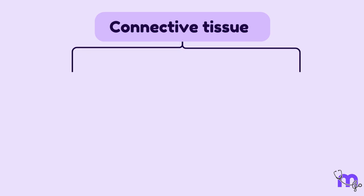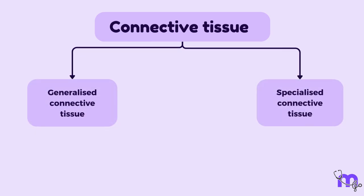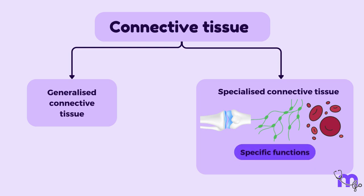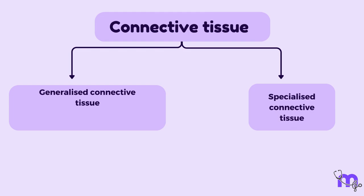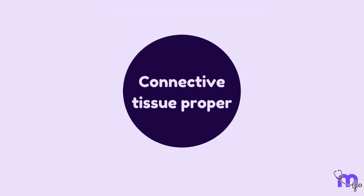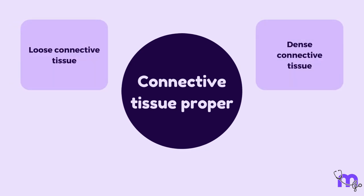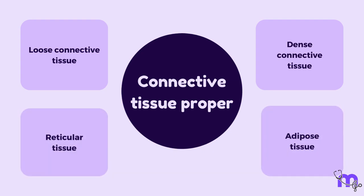In the broadest sense, connective tissue is of two types: general and specialized connective tissue. Bone, cartilage, blood, and lymph have very specific functions and hence come under the category of specialized connective tissue, which we will discuss in subsequent sessions. General connective tissue is also called connective tissue proper — a broad category that includes subsets like loose connective tissue, dense connective tissue, reticular tissue, and adipose tissue.